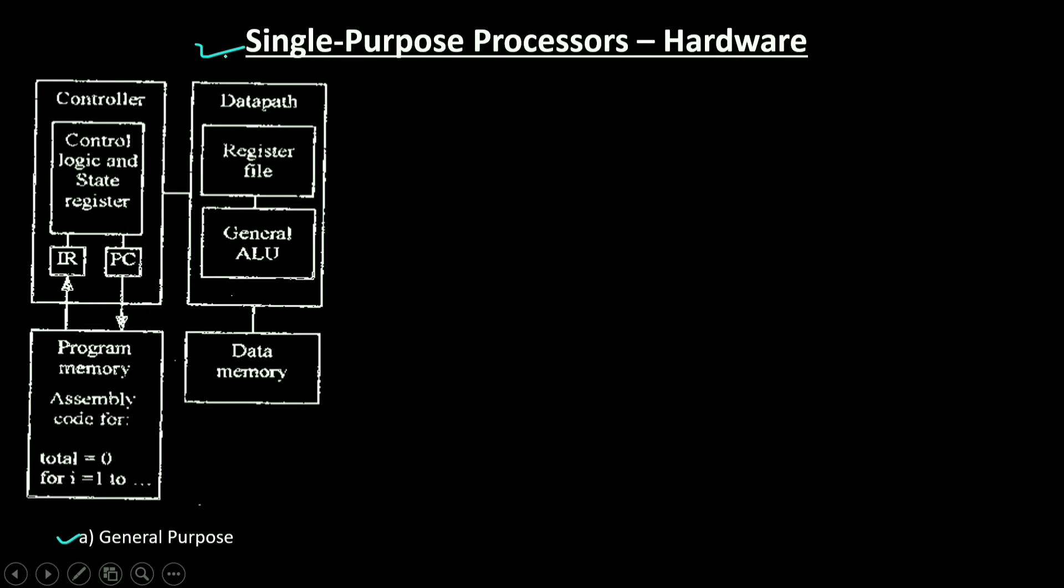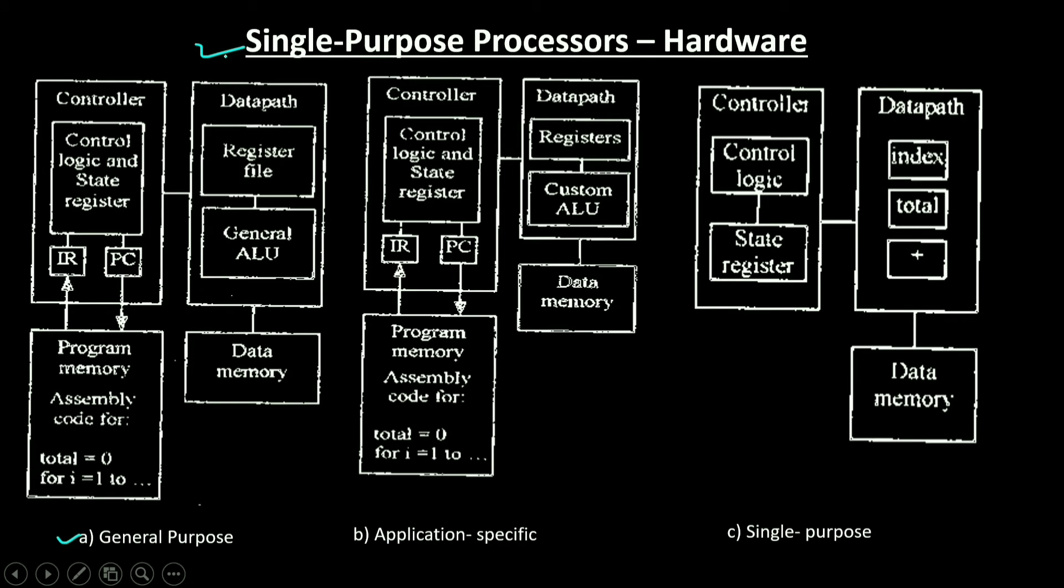Other common terms include coprocessor, accelerator, and peripherals. Using a single-purpose processor in an embedded system results in several design metric benefits and drawbacks, which are essentially the inverse of those for general-purpose processors. Performance may be fast, size and power may be small, and unit cost may be low for large quantities, while design time and NRE cost may be high. Flexibility is low, unit cost may be high for some quantities, and performance may not match general-purpose processors for some applications.